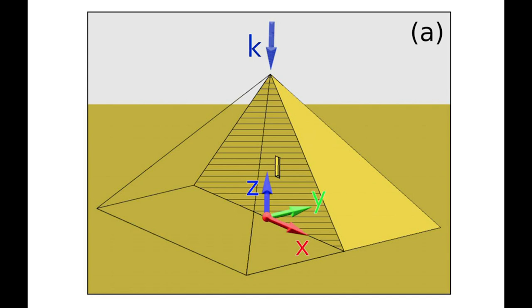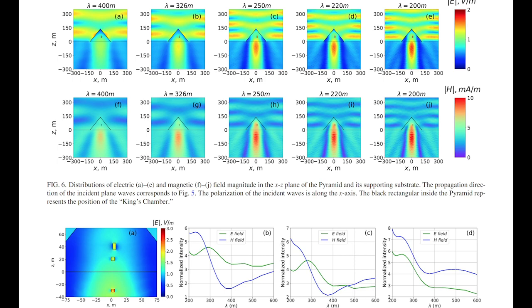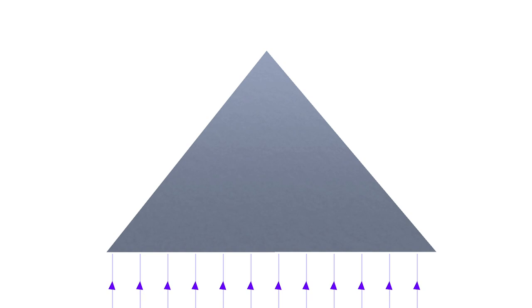This energy concentration indicates that the Great Pyramid functions as an antenna for the Earth's energy to facilitate its life-sustaining motor.